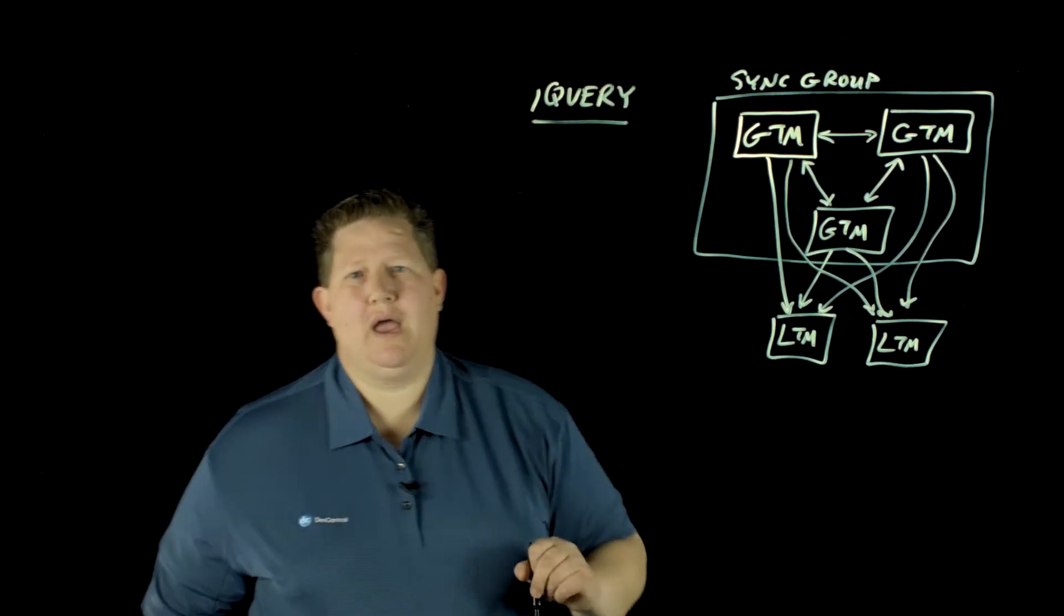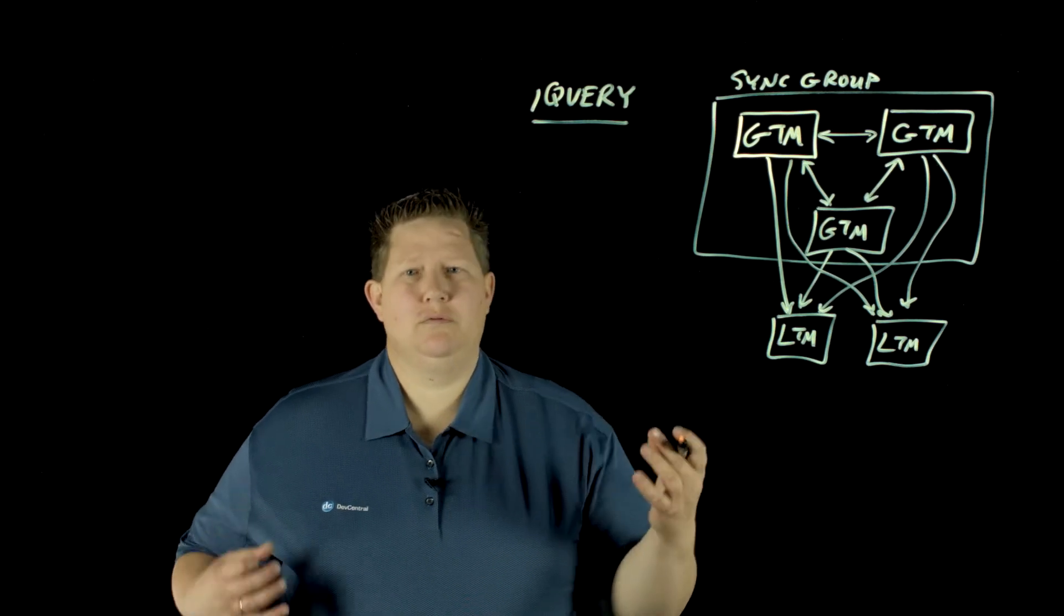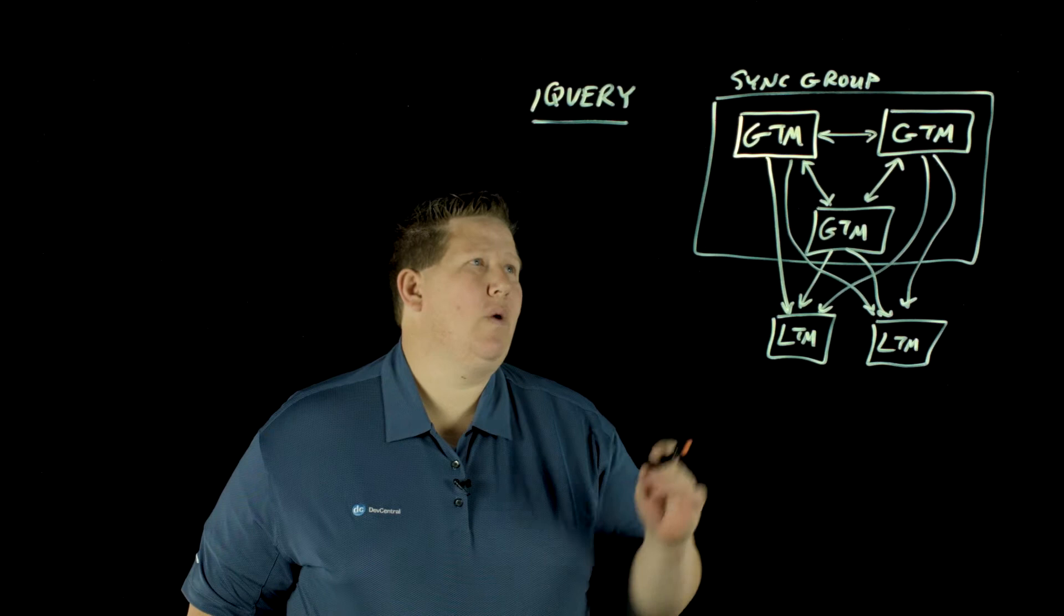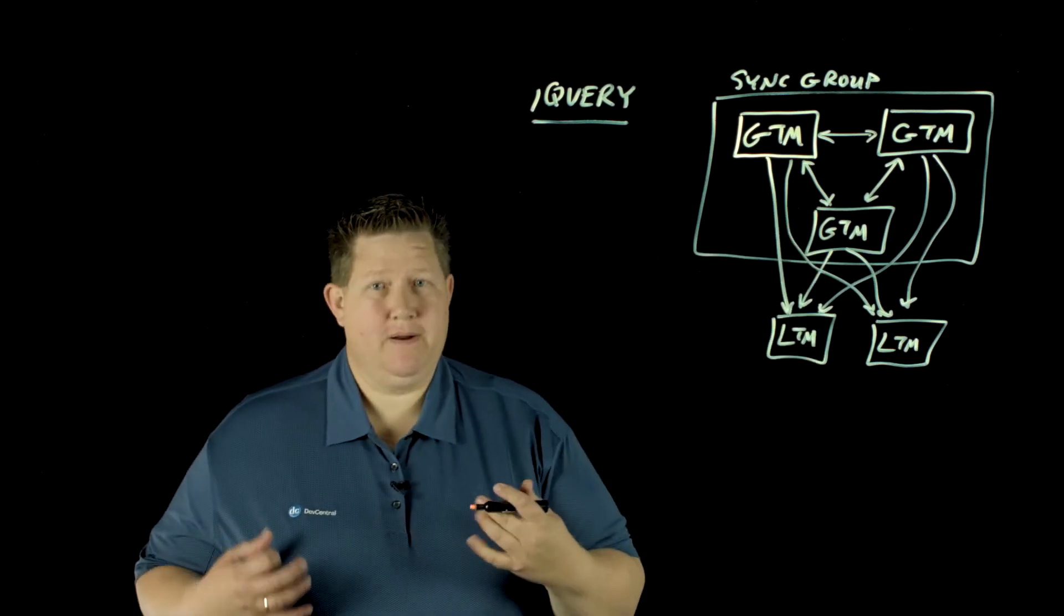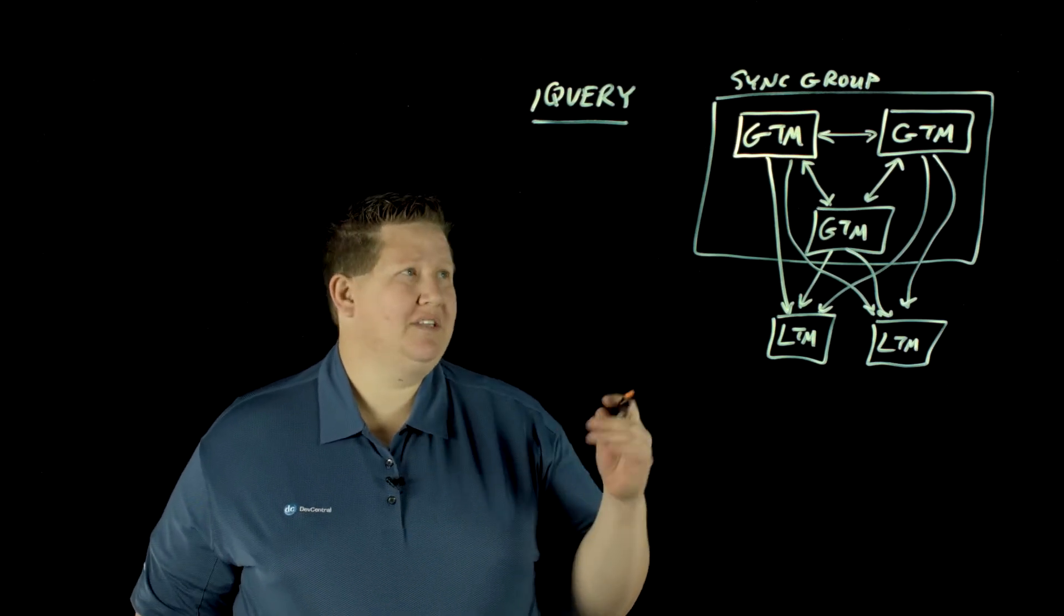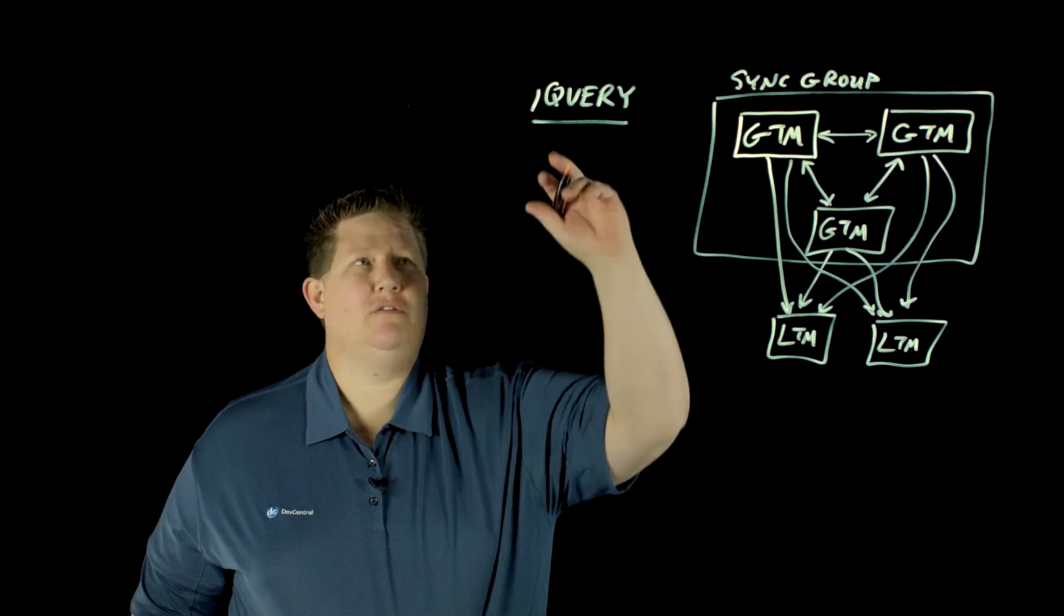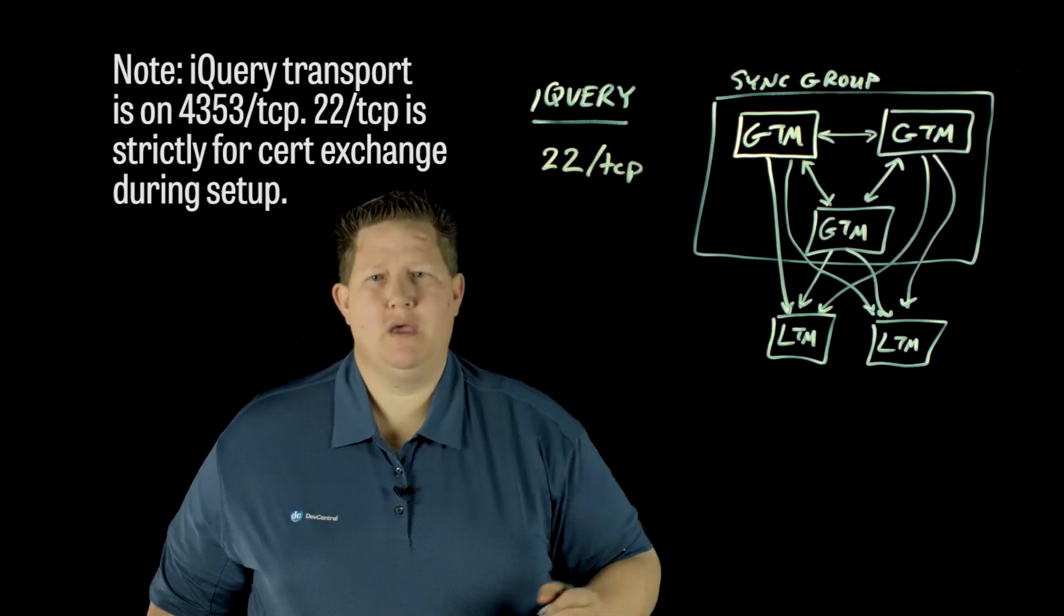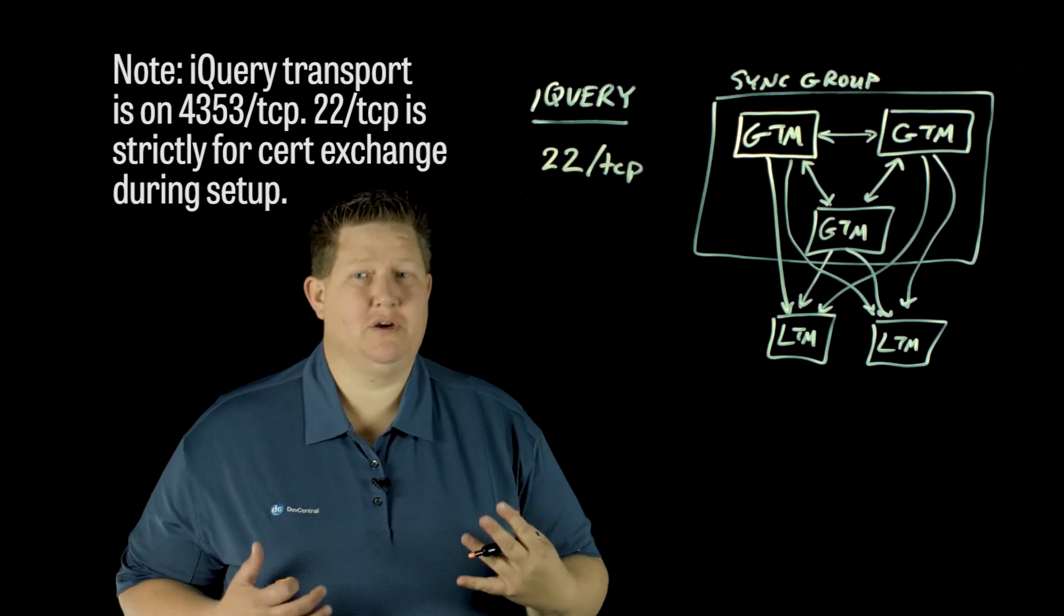iQuery uses TLS to speak over, so it's encrypted traffic. And the way that all of these devices get there is that you have to go through a progression to establish communication. So before you get to the iQuery, you have to use port 22 TCP and use SSH and SCP to do the cert exchange.